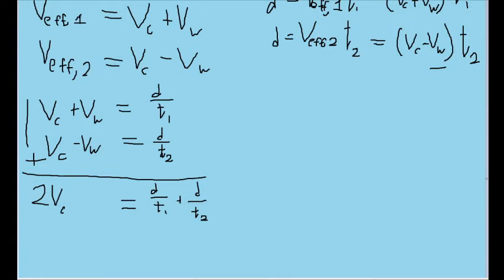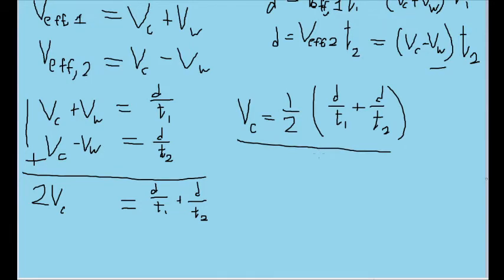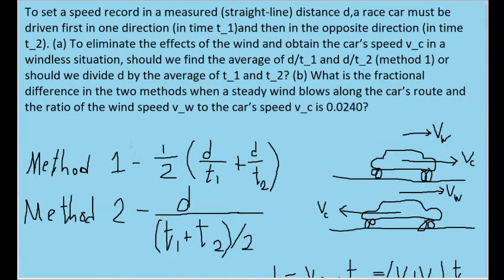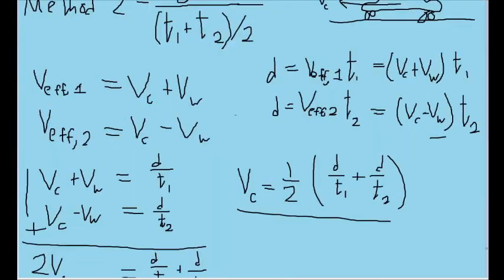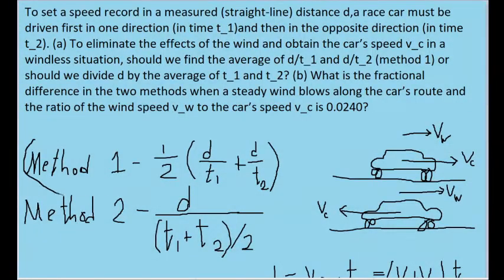We can solve for v_c by dividing both sides by two. And this right here becomes our formula for v_c. Notice that this is exactly the same as the formula for method one. So method one is going to be our answer. That's the method we want to use that will cancel out the wind speed.